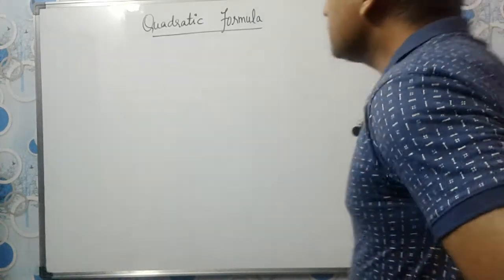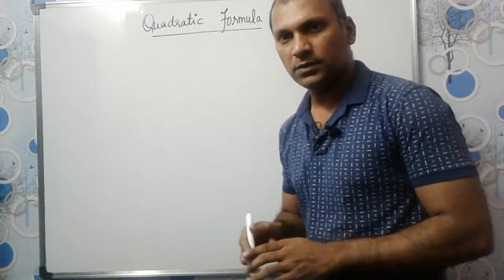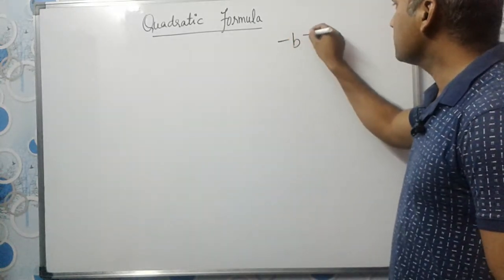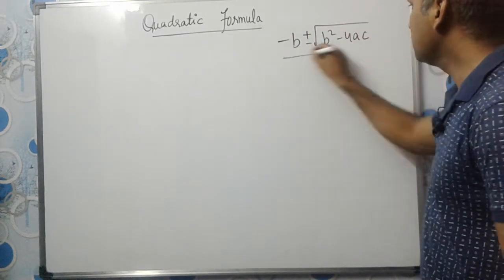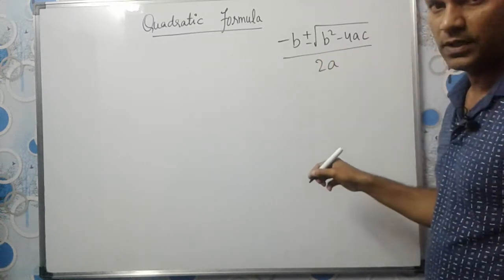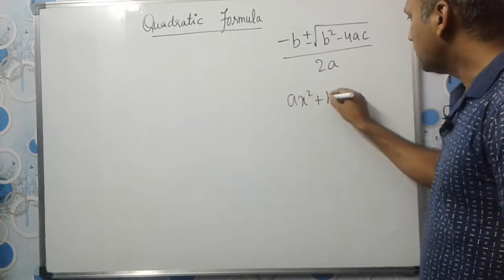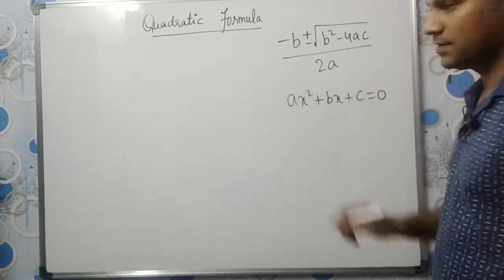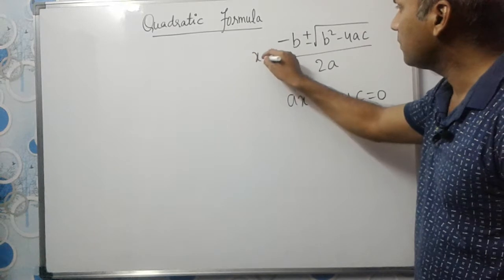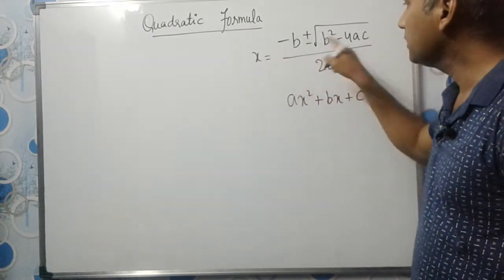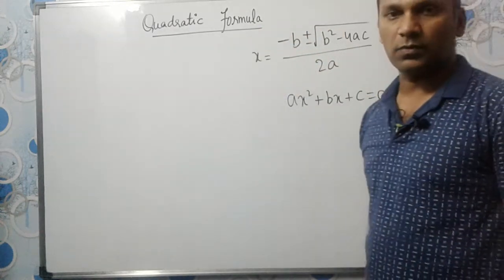Hello students. In this video we will learn about the quadratic formula. The quadratic formula is minus b plus minus root b squared minus 4ac divided by 2a. This is the quadratic formula when the equation is in standard form of a quadratic equation, and the values of x are given using this formula.